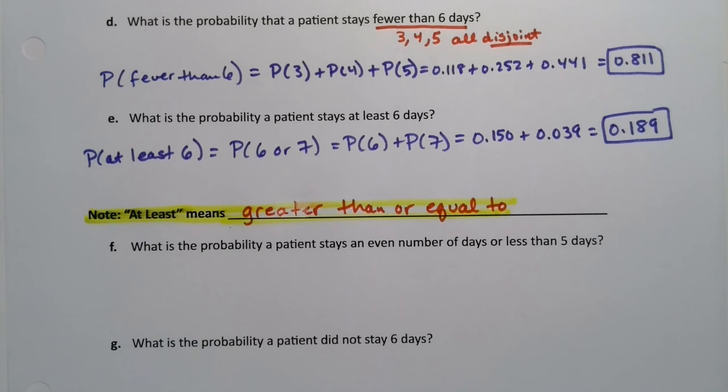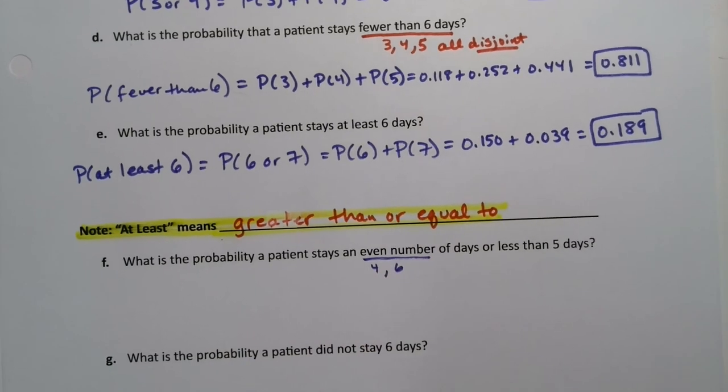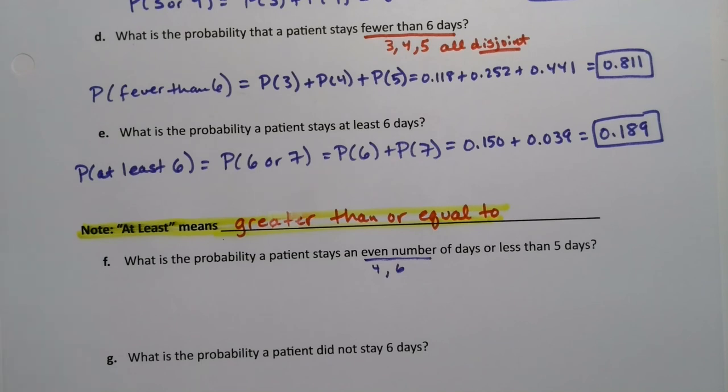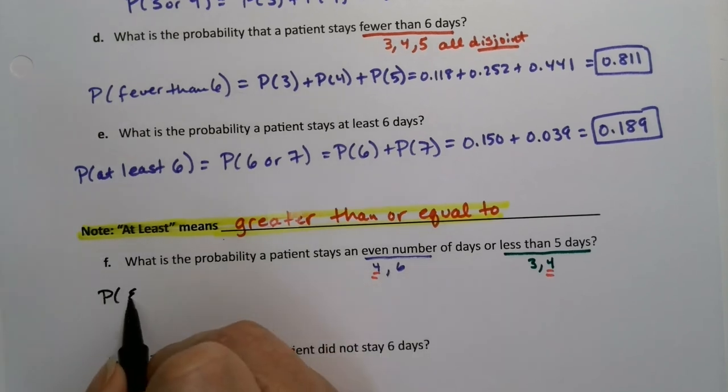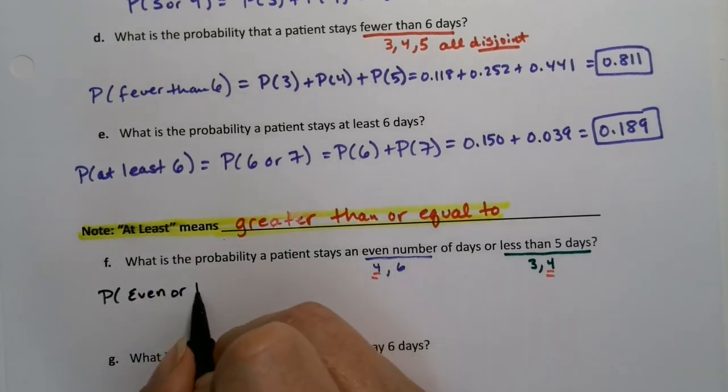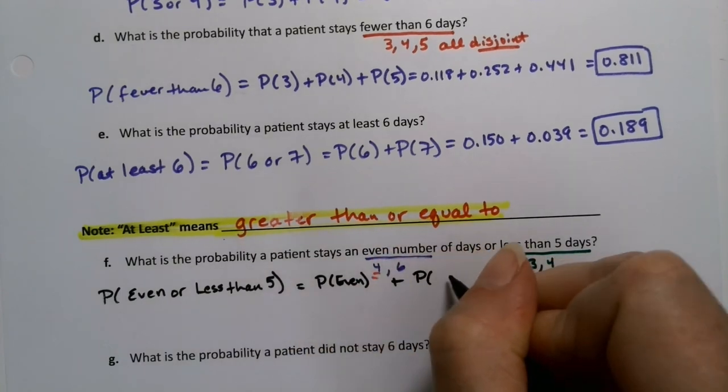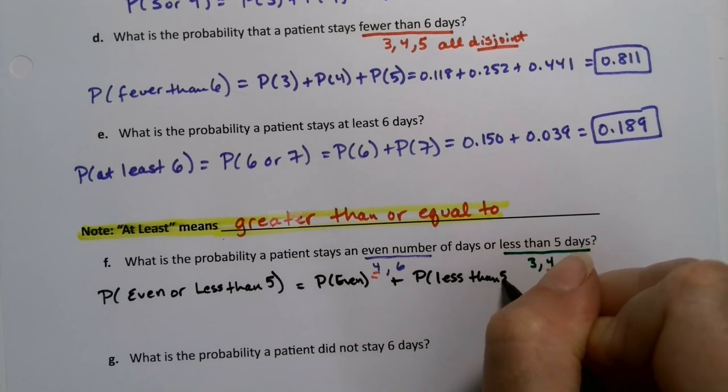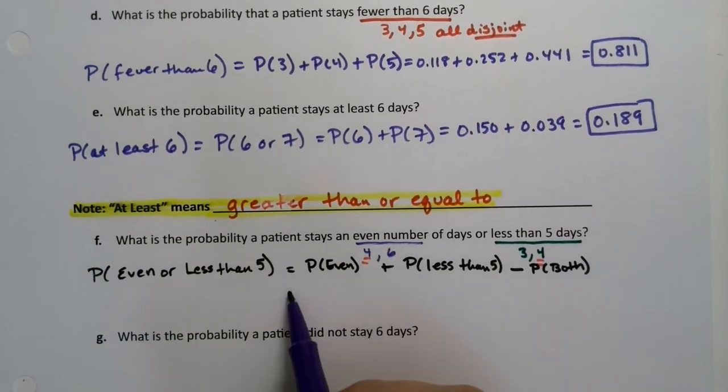What is the probability that a patient stays an even number of days or less than 5 days? An even number of days would be 4 and 6. Less than 5 would be 4 or 3. If you'll notice, these are not disjoint. We're going to have something snazzy here. I want the probability of even or less than 5. It's going to be the probability of even plus the probability of less than 5, but minus the probability of both.